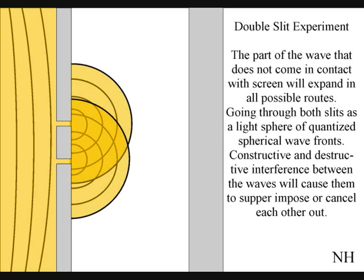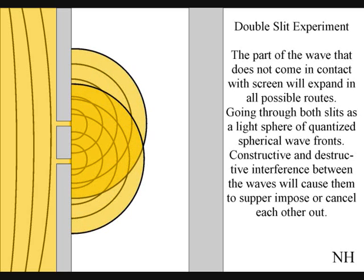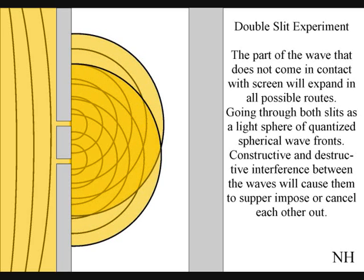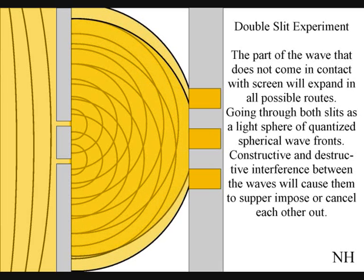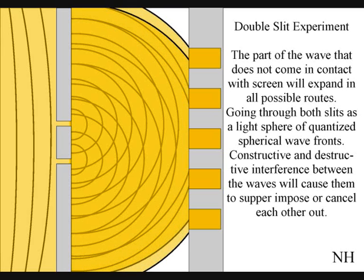Constructive and destructive interference between the waves will cause them to superimpose or cancel each other out. When this wave particle function comes in contact with the screen, it will collapse, creating new moments in time and new quantum particles in the shape of an interference pattern.